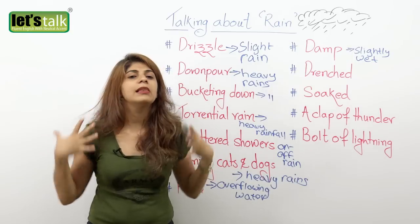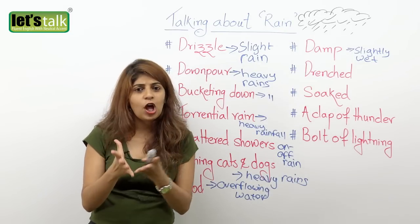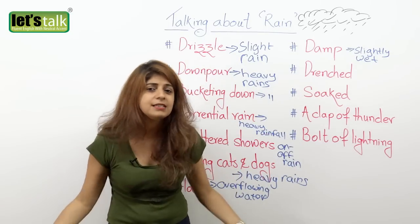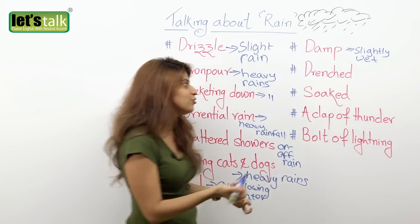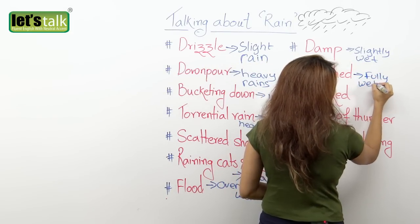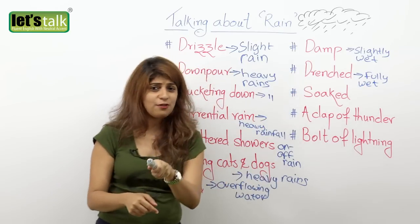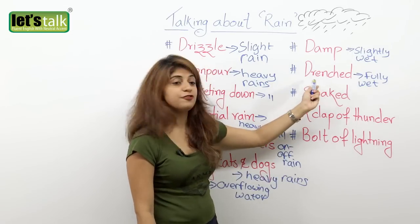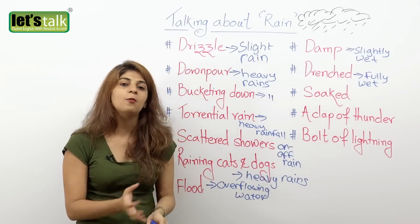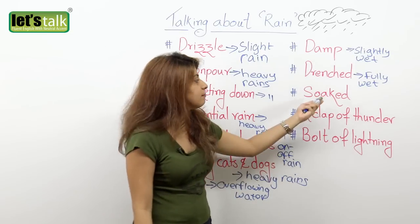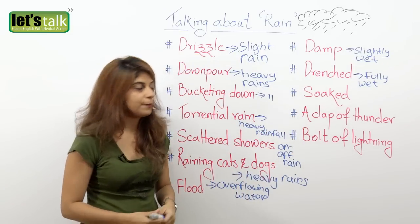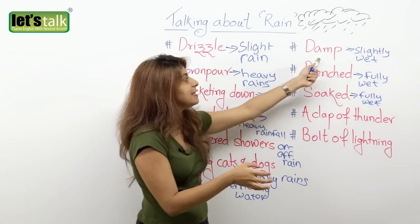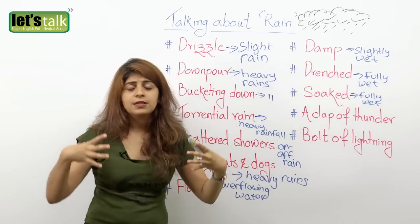Another word for when you are completely wet: if you probably forgot to carry an umbrella, you get drenched. So rather than saying oh my god I'm completely wet, say I am drenched. Drenched means you are fully wet. Don't take that risk — carry an umbrella, especially when it rains. Another word you can use instead of drenched is soaked. Soaked is also when you are fully wet — your clothes are dripping water, so that means your clothes are soaked with water. So damp is slightly wet, whereas drenched and soaked both mean you are completely wet.